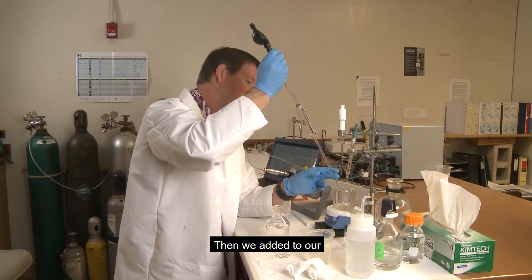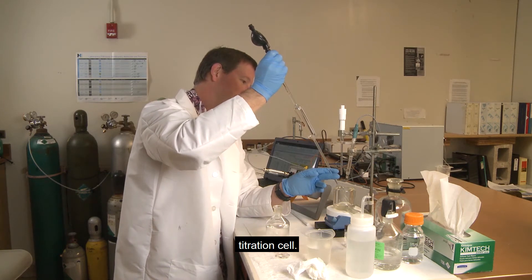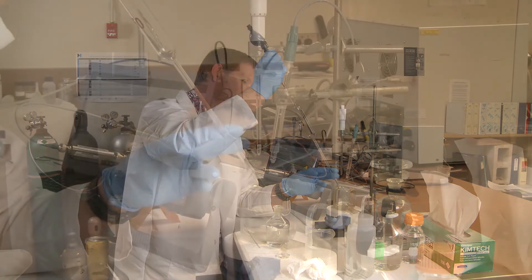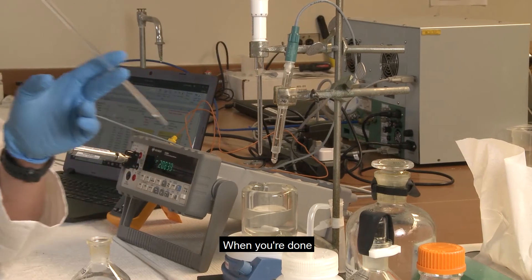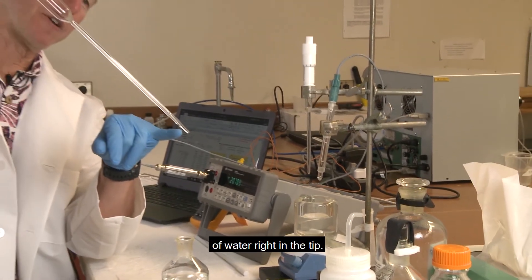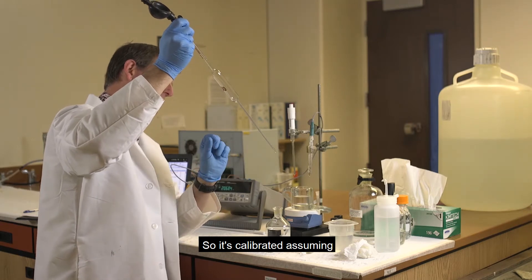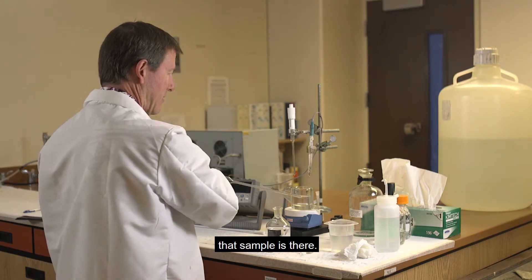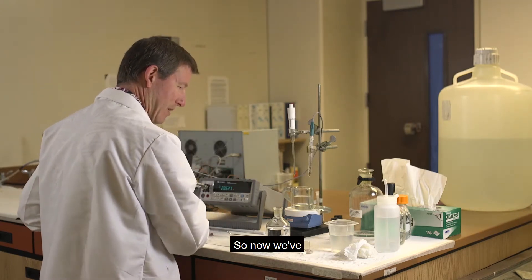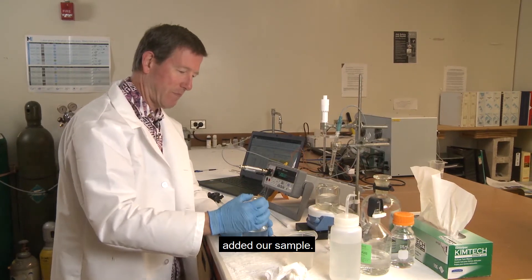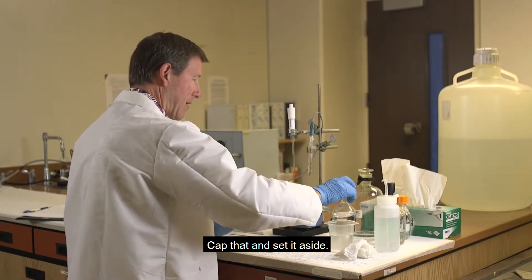Then we add it to our titration cell. When you're done, there's still a little bit of water right in the tip. That's supposed to be there, so it's calibrated assuming that that sample is there. So now we've added our sample, cap that and set it aside.